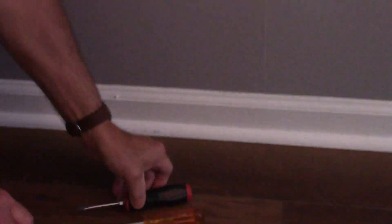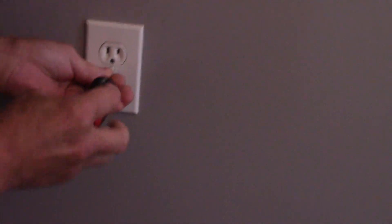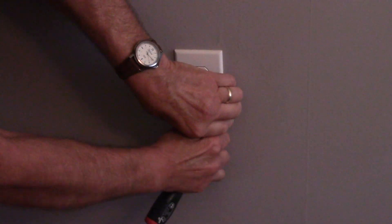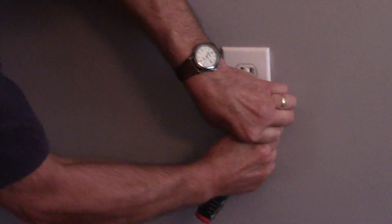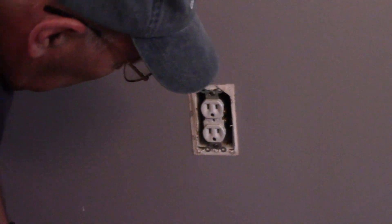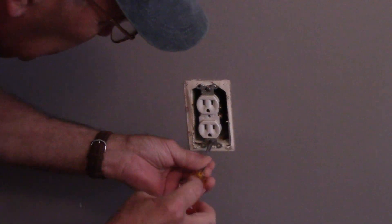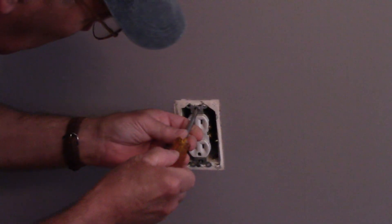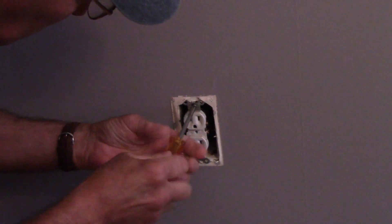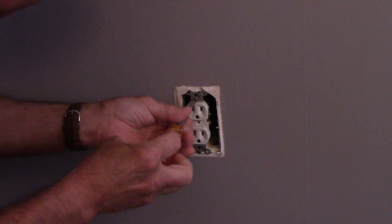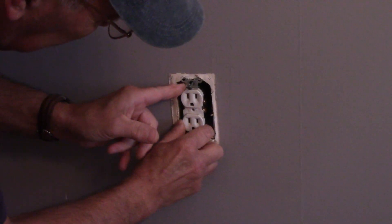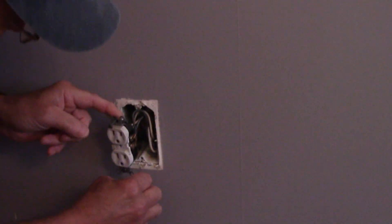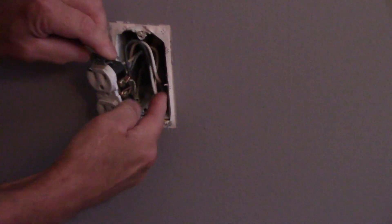So the first thing we're going to do is we're going to come in here and we're going to take off this cover right here. We're going to take out the Phillips head screws. And then we'll take our socket and just pull it out just a little bit. Now, you want to remember how the wiring bends because that's how you're going to put it back in.